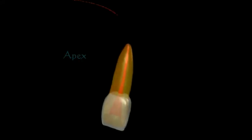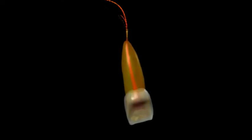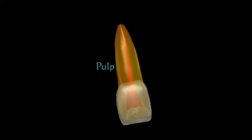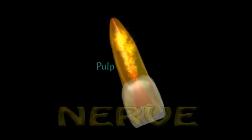Through this opening enter the nerve fibers and blood vessels which bring nutrients to the tooth and take away the toxins. These contents of the canal are called the dental pulp, or in lay terms, the nerve of the tooth.